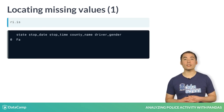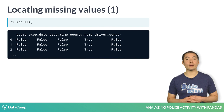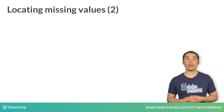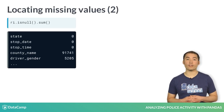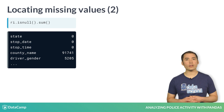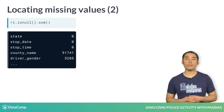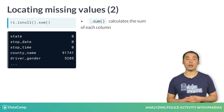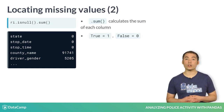You may recall that the isnull method generates a data frame of true and false values — true if the element is missing, and false if it's not. One useful trick is to take the sum of this data frame, which outputs a count of the number of missing values in each column. The sum method calculates the sum of each column by default, and true values are treated as ones, while false values are treated as zeros.